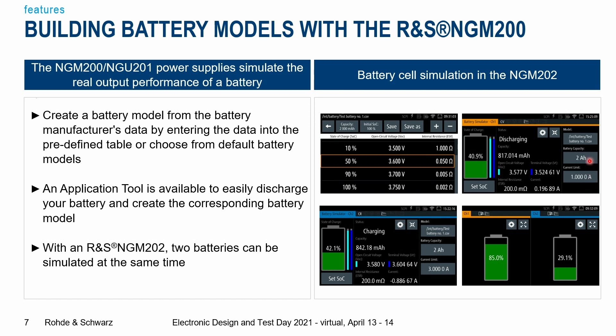You see your battery capacity, your current limit — whether it is discharging or charging — and of course your open circuit voltage and terminal voltage. You can always set the state of charge with just a click, going from 89% to 5% for example. If you're using an NGM 202, it has two channels and can also simulate two batteries at one time.